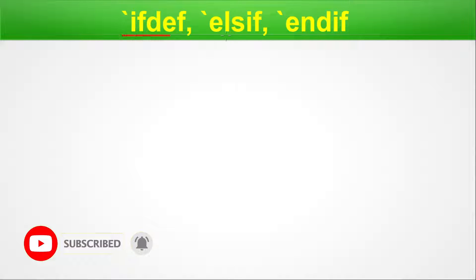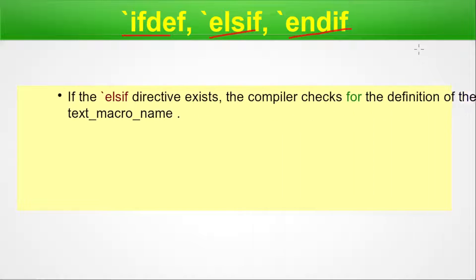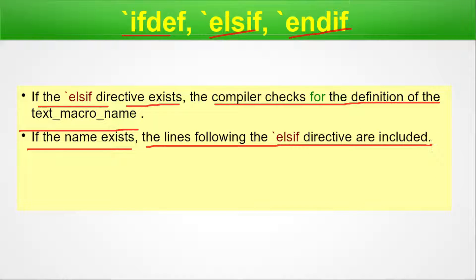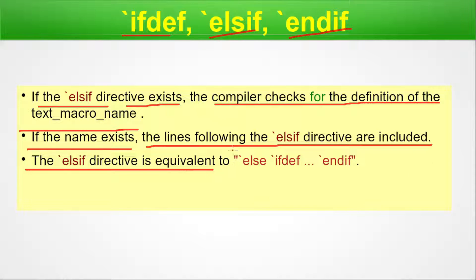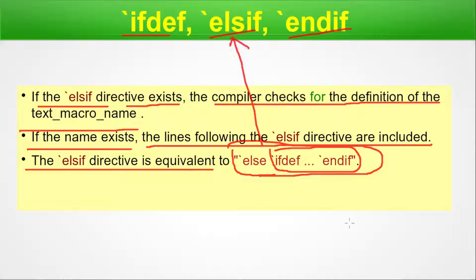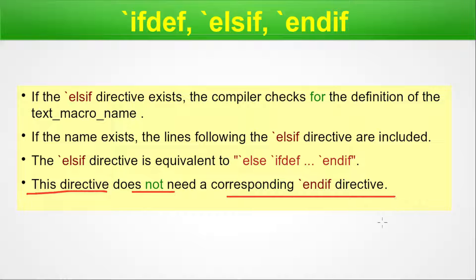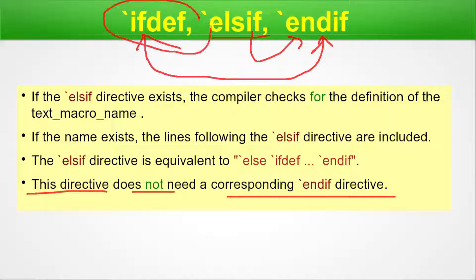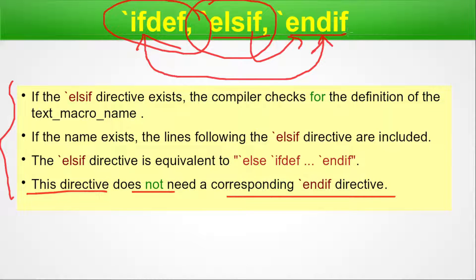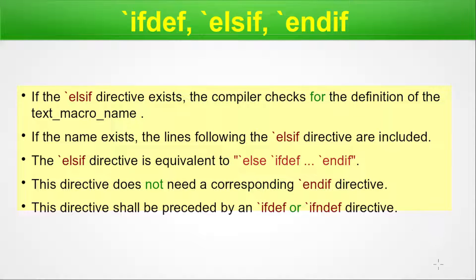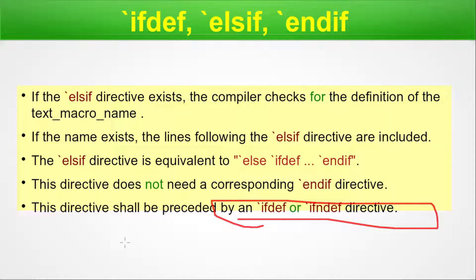For ifdef, elseif, and endif: the elseif directive causes the compiler to check for the definition of the text macro name. If the name exists, the lines following the elseif directive are included. The elseif directive is equivalent to having an else block with a nested ifdef and an endif inside it. This directive does not need a corresponding endif because the outer ifdef already has its paired endif. The elseif directive shall be preceded by an ifdef or ifnotdef directive.